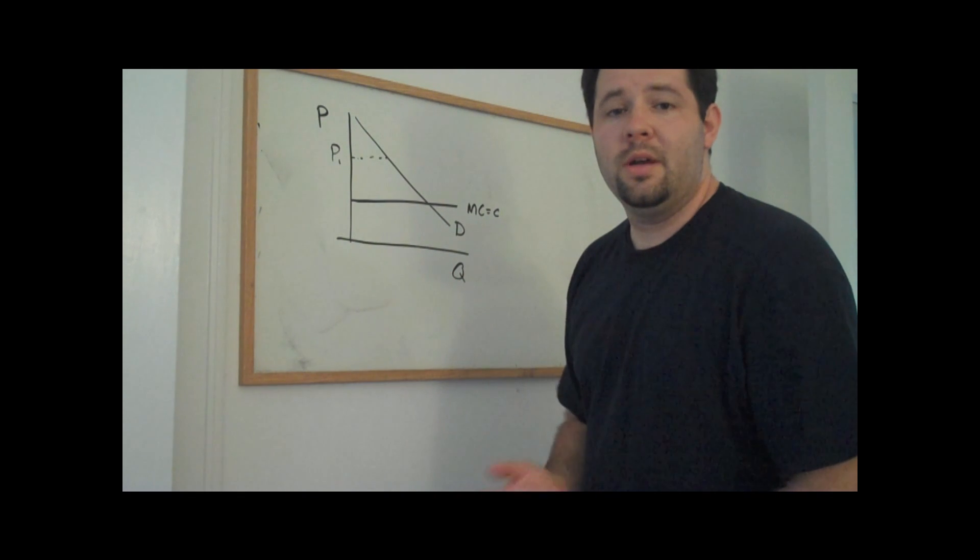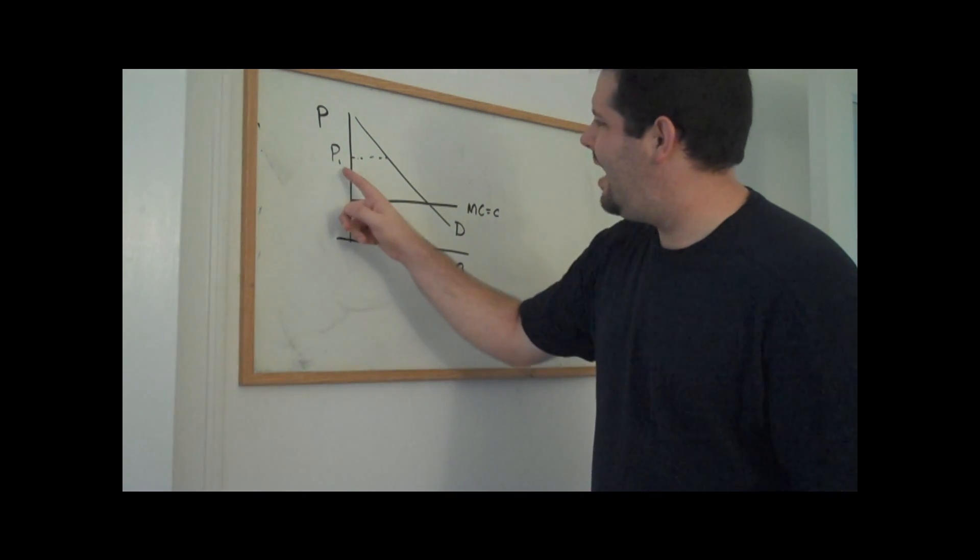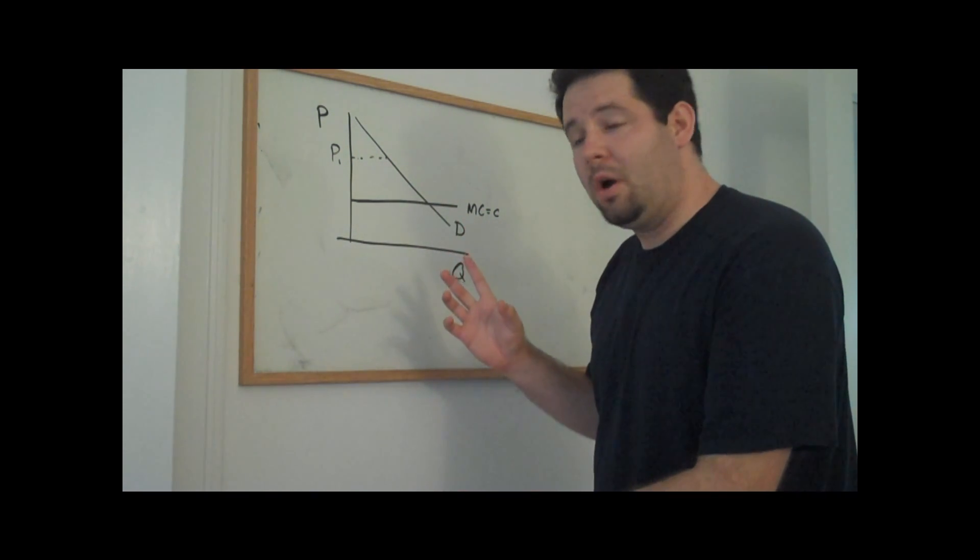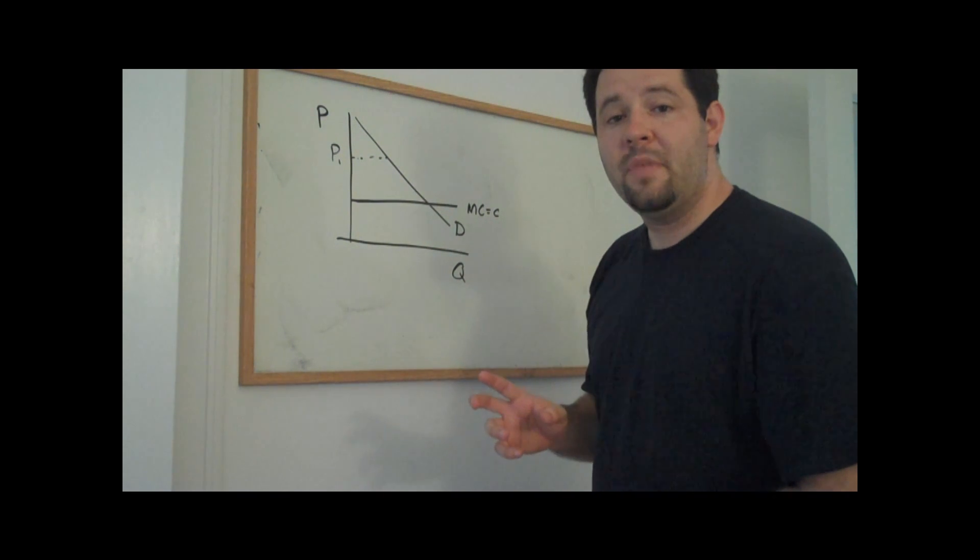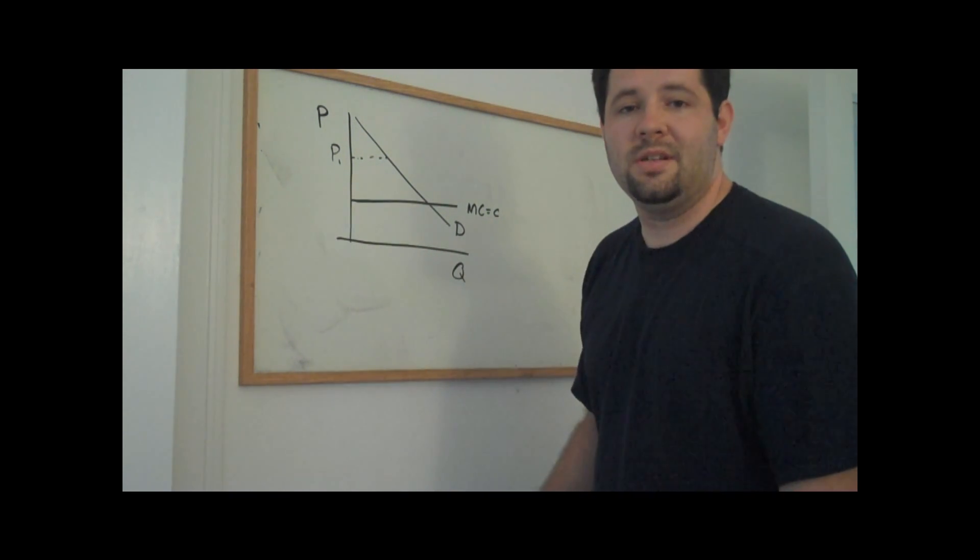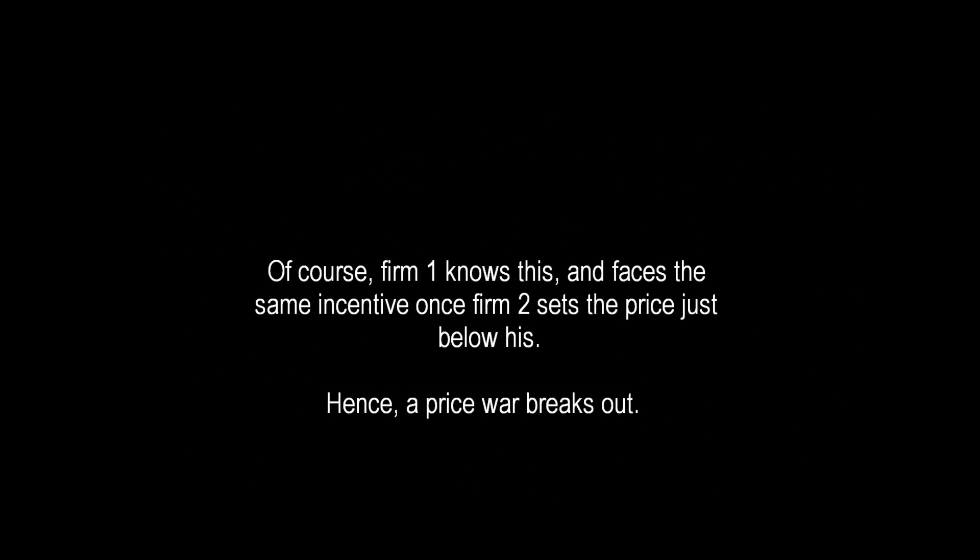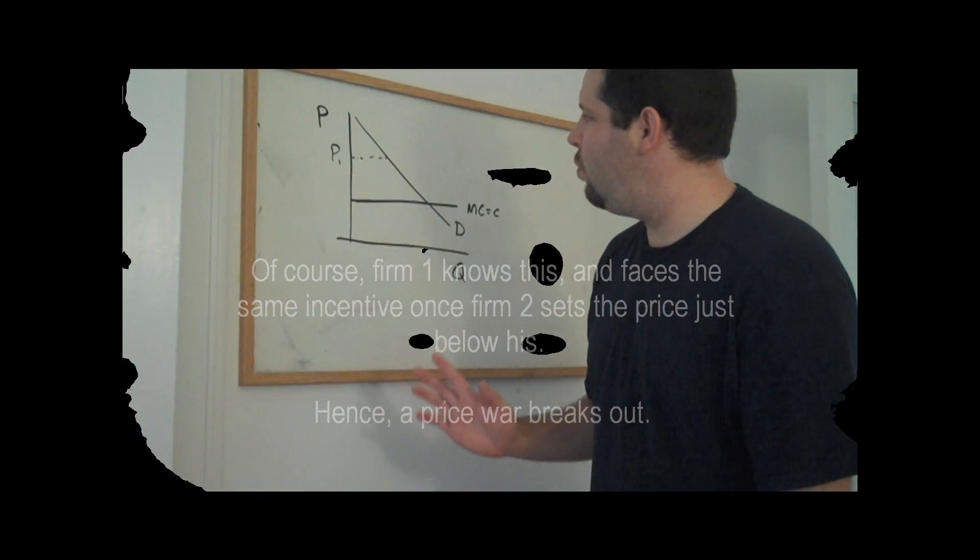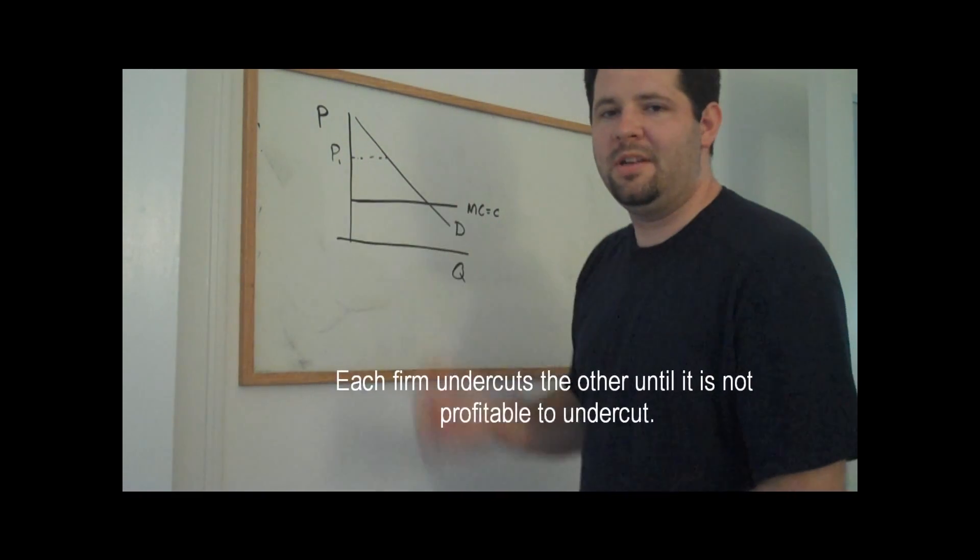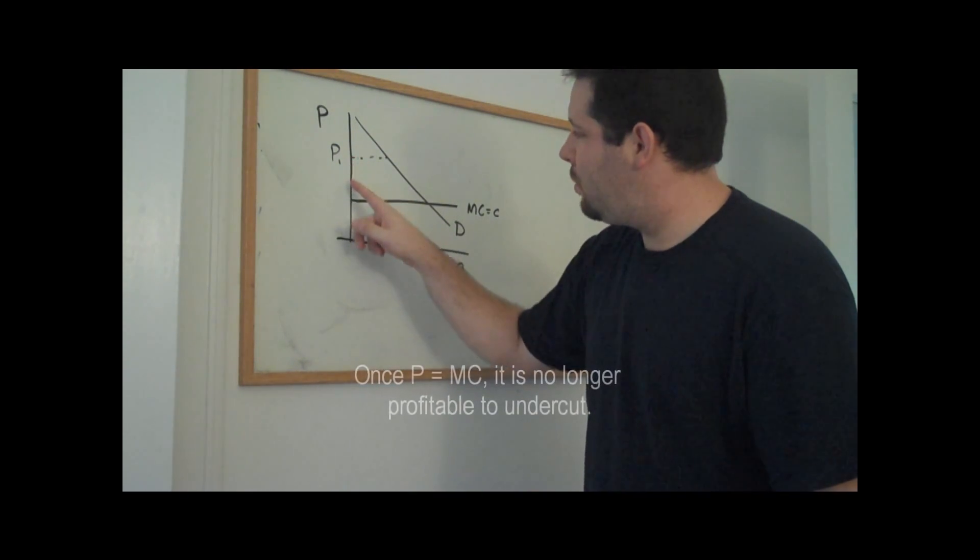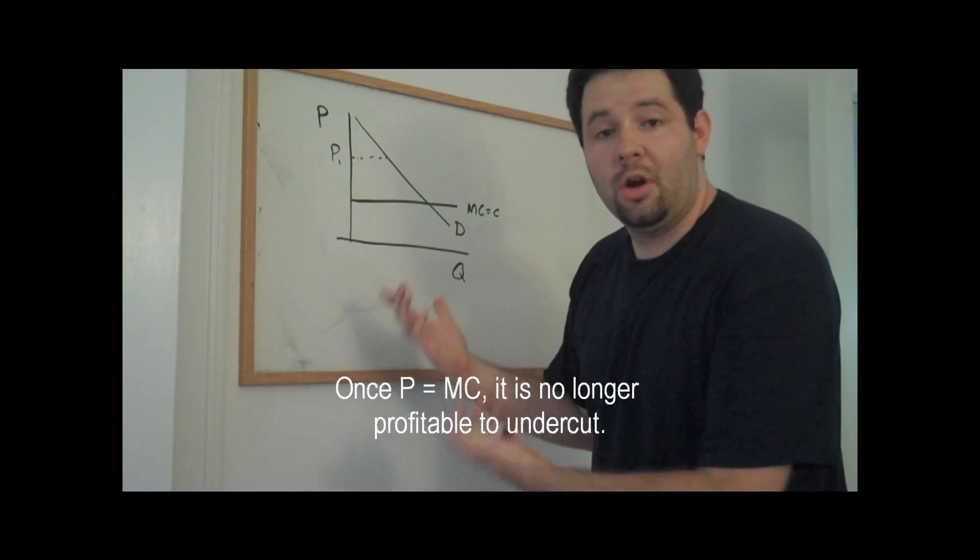But if firm two comes along and says, I know you're selling at a price of P1, I'm going to cut you by just a little bit. All consumers in this market will go to firm two and firm one will go out of business. They won't make any sales. And what you would expect is when you have price competition in this manner, what will happen is that the price will get driven down to the marginal cost.